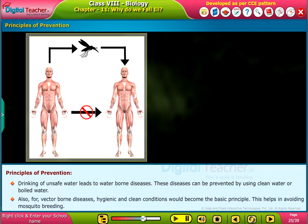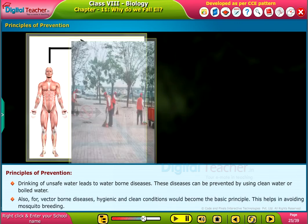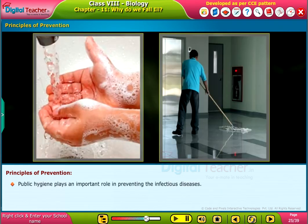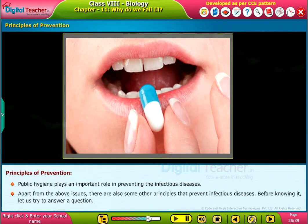For vector-borne diseases, hygienic and clean conditions are the basic principle, which helps in avoiding mosquito breeding. Public hygiene plays an important role in preventing infectious diseases.